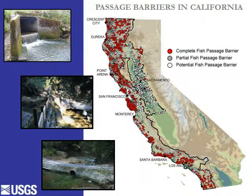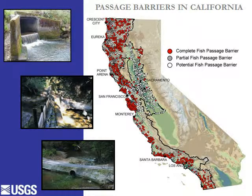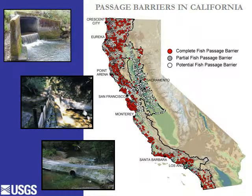This is a case where California is using these point events to show fish blockage. In the top picture there is a bridge where it is partial blockage because some fish can get through and some can't. The middle one is a dam where it's complete blockage because no fish can get through. And the bottom one is a case of potential blockage, because if the water level goes down they won't be able to get through that culvert.